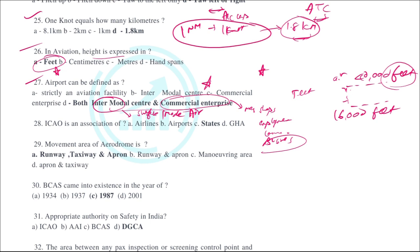ICAO is an association of states. ICAO has more than 150 countries, referred to as states in aviation. India is also a state for ICAO — the correct term used in aviation is states, not countries.